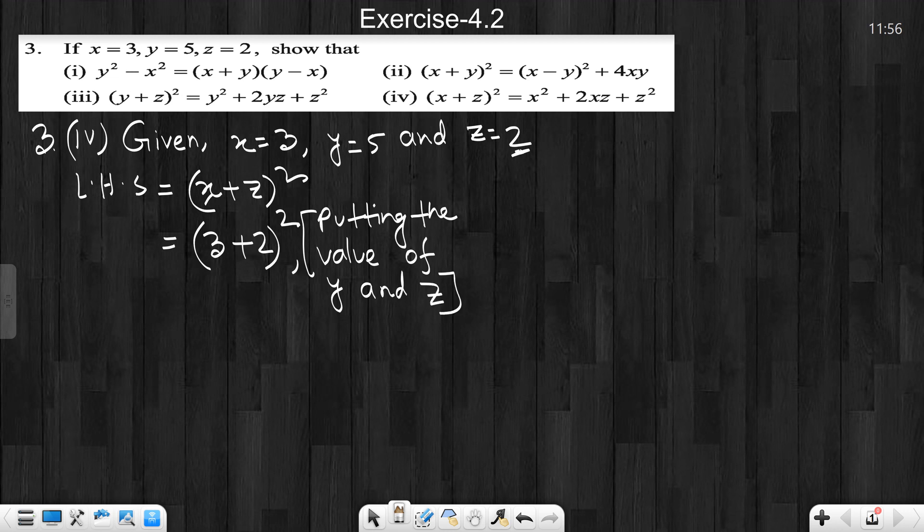So 3 plus 2 is 5, 5 whole square. 5 square means 5 times 5. So 5 times 5 is 25. Left hand side is 25. Now let's see what right hand side is.